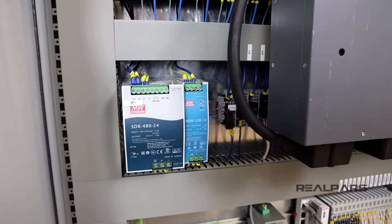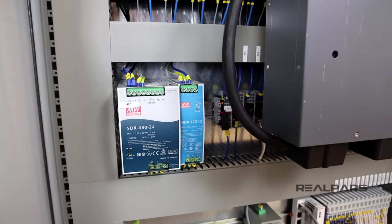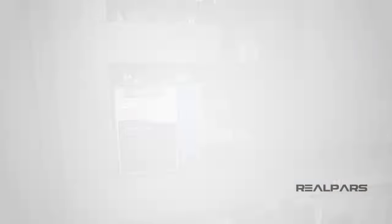Wonder why the 24V power supply has a greater output amperage compared to the 12V power supply? This is because the number of devices, or the devices themselves, powered by the 24V power supply, require more input current to operate than those powered by the 12V power supply.